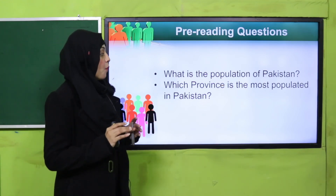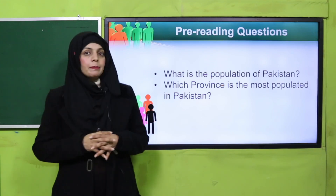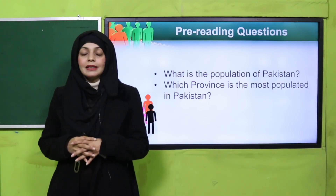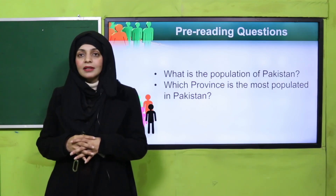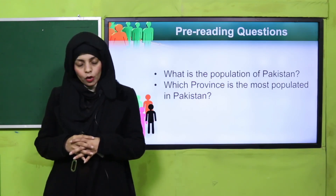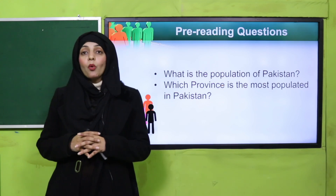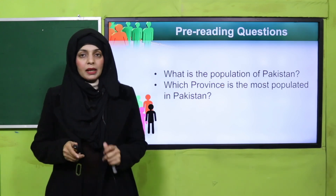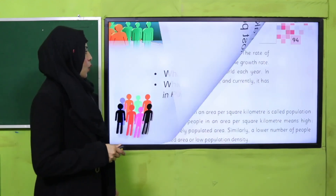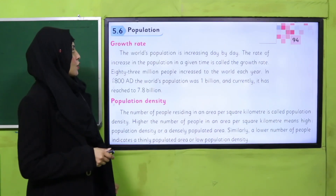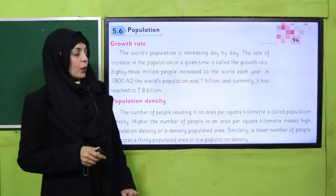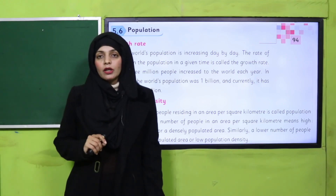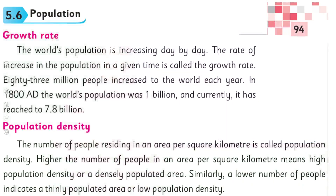And which province is the most populated in Pakistan? Punjab is the most populated province of Pakistan. Quickly open page number 94 in your Social Studies grade 5 books.